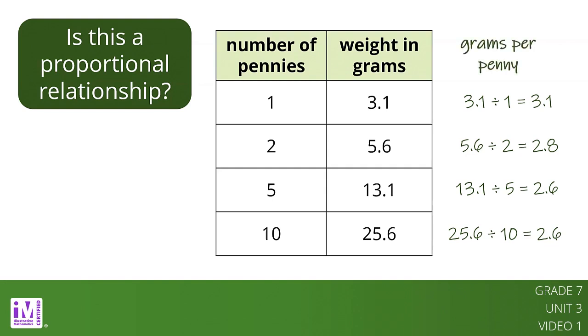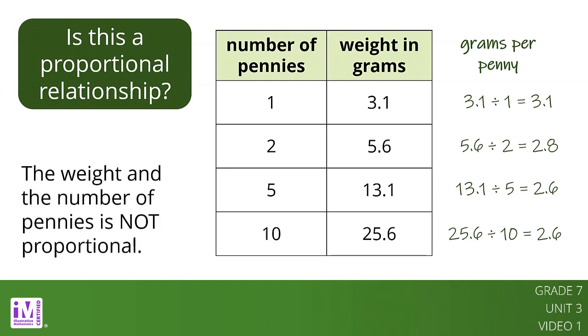We might expect this relationship to be proportional, but these quotients are not very close to one another. The relationship between the weight and the number of pennies is not proportional.